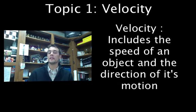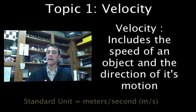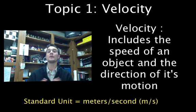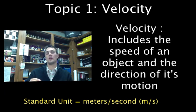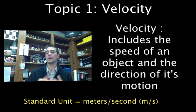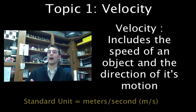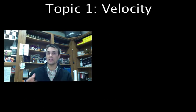The standard unit for velocity is the same as speed — meters per second. There are also more familiar units like miles per hour, kilometers per minute, or kilometers per hour. But the standard unit in science is meters per second. We now attach a direction to it — typically north, south, east, west, northeast, southeast, northwest, southwest, up, down, at a 45-degree angle, etc. You attach a direction to the speed.